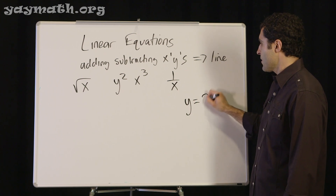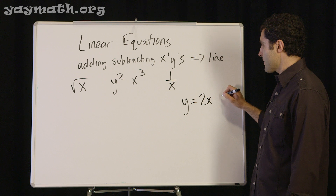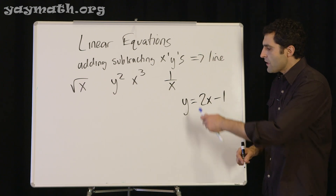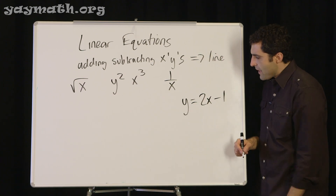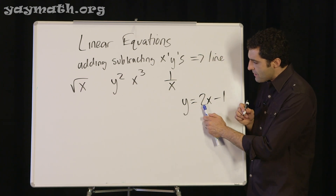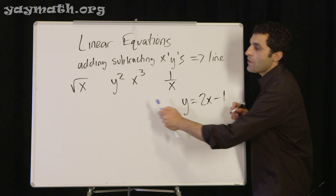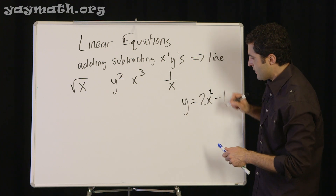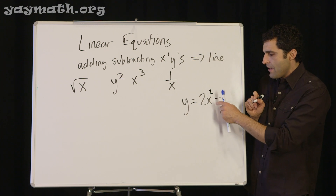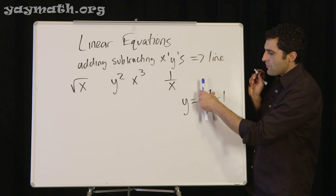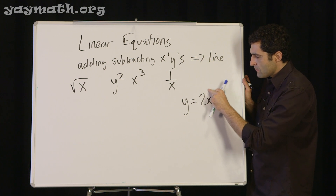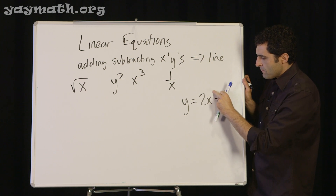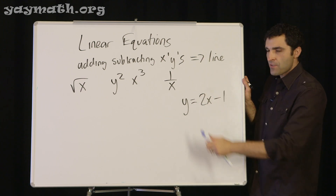We're talking about stuff like y equals 2x minus 1. Here we're adding and subtracting x's. We're allowed to multiply x by stuff as long as we don't make it the square root of x, x squared, or anything like that. If you just have your standard x's and y's with adding and subtracting numbers, that constitutes a line.